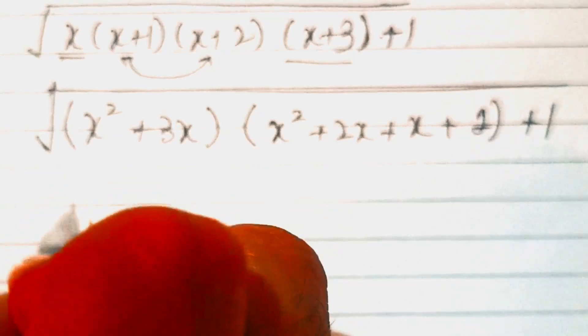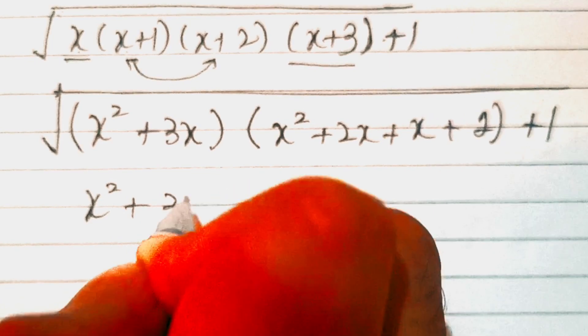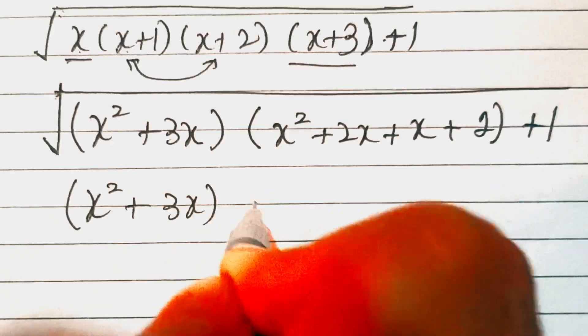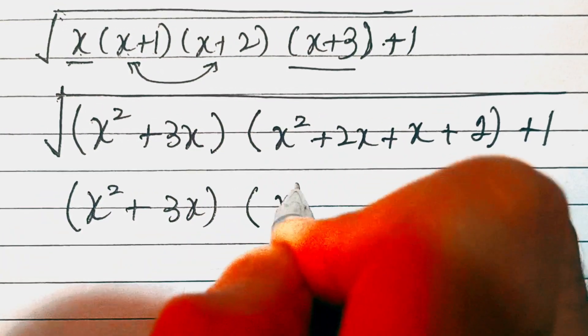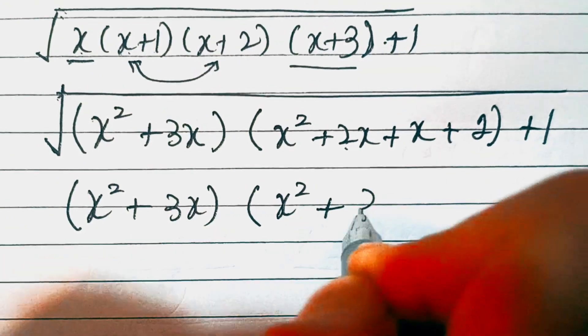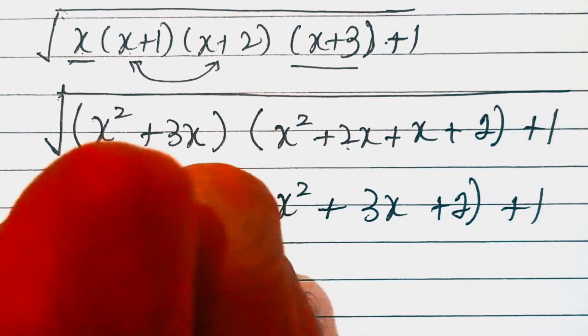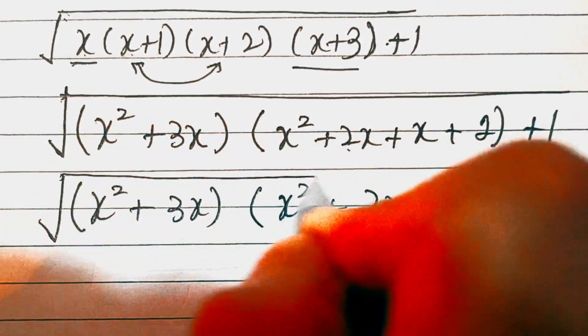So this is x squared plus 3x, and this is x squared. Now 2x and x are like terms, so these will get added. This is 3x plus 2 plus 1, whole square root.